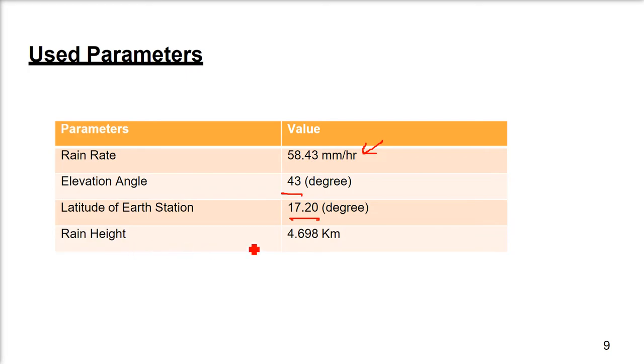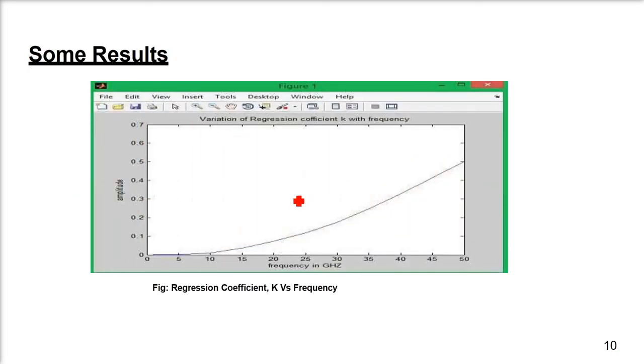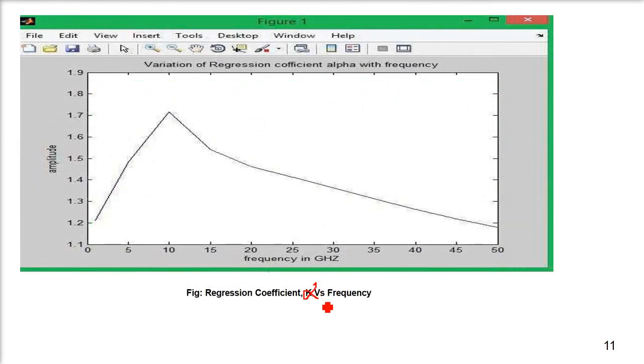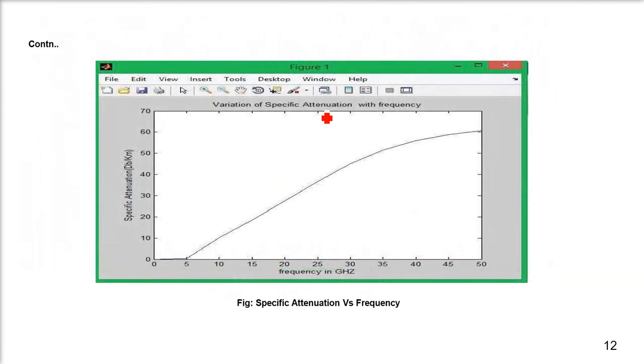Rain rate is 58.43 millimeters per hour, elevation angle is 43 degrees, latitude of earth station is 17.20 degrees, and rain height is 4.698 km. When we talk about variation of regression coefficient k with frequency, this is the variation as you increase frequency. Here is the variation of alpha with frequency. Then we have the specific attenuation with frequency, so attenuation increases with frequency.